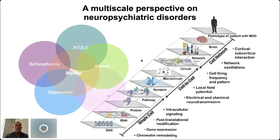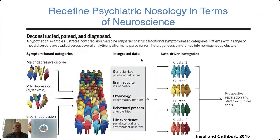That is not necessarily very specific and differentiating, and thus is one of the core challenges. We really fundamentally want to get to a level where we can move — this is the RDoC framework from Tom Insel and Bruce Cuthbert — where they talked about moving away from the symptom-based categories of mental illnesses to using integrated data to drive a data-driven definition of disorders based on the underlying biological mechanisms. That's a grand challenge for psychiatry.